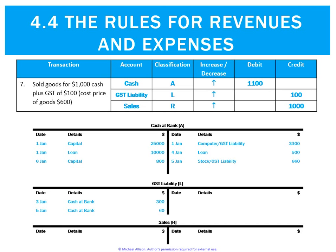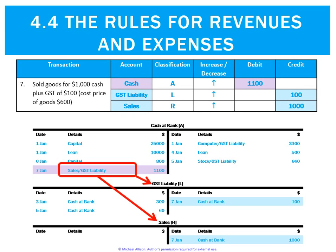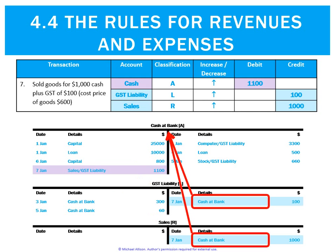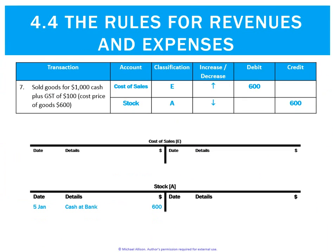Looking at posting the sale amount, we post a debit to cash and credits to GST and sales. The cash ledger will need a double reference because it spreads over two other ledgers — sales and GST. The other two ledgers just reference cash. For the cost of sale entry, we post a debit to cost of sales and a credit to stock, with simple referencing to each ledger.